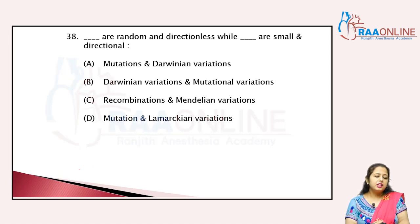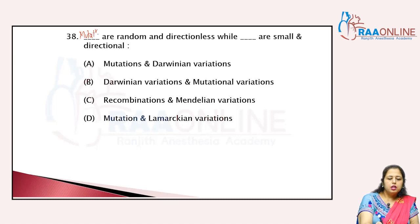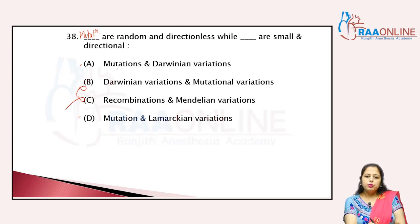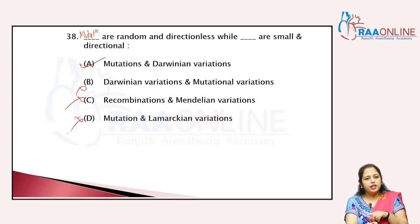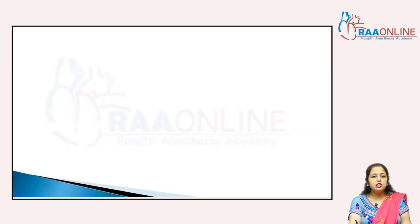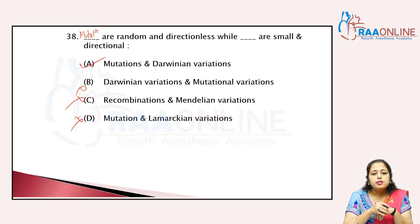Mutations are random and directionless, while Darwinian variations are small and directional. Is that Lamarckism or Darwinian variation? It is Darwinian variation — small and directional. According to Lamarckism, variations are non-directional. So the answer is A. Evolution topic is now completed.